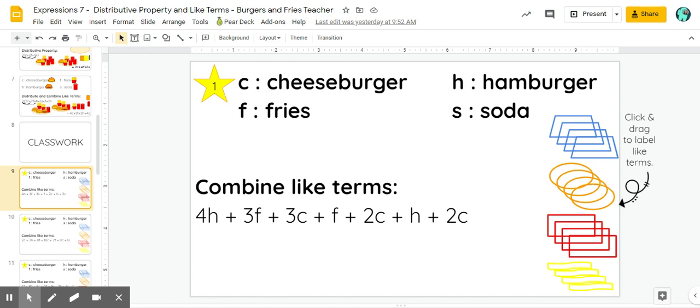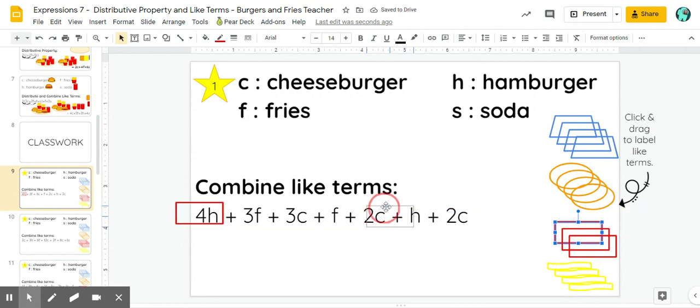Here's a few examples from the classwork. We need to label things with the same variable. It doesn't matter which shape you use, but you have to be consistent throughout your problem.